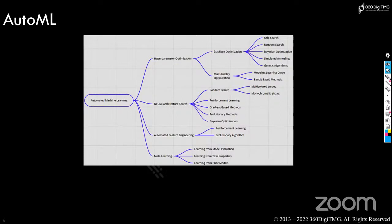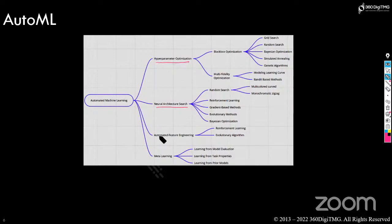Yesterday we started off with AutoML and understood that even without writing a single line of code we can accomplish machine learning algorithms. As part of that, we discussed that hyperparameters can be optimized, neural architecture search can be automatically performed, and feature engineering can also be automatically performed. There is also something called meta learning — learning from the results of your model — which we will get into at a later point.